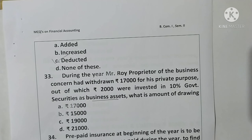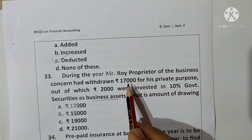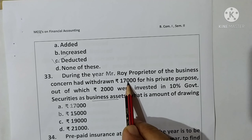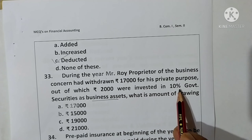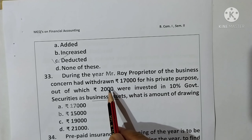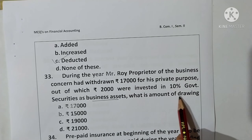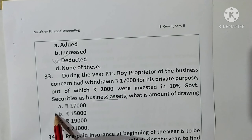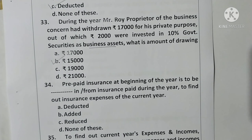Question 33: During the year, Mr. Roy, proprietor, withdrew rupees 70,000 for private purposes, out of which rupees 2,000 were invested in 10% government securities as a business asset. Amount of drawings = 70,000 − 2,000 = rupees 68,000. Option B is correct.